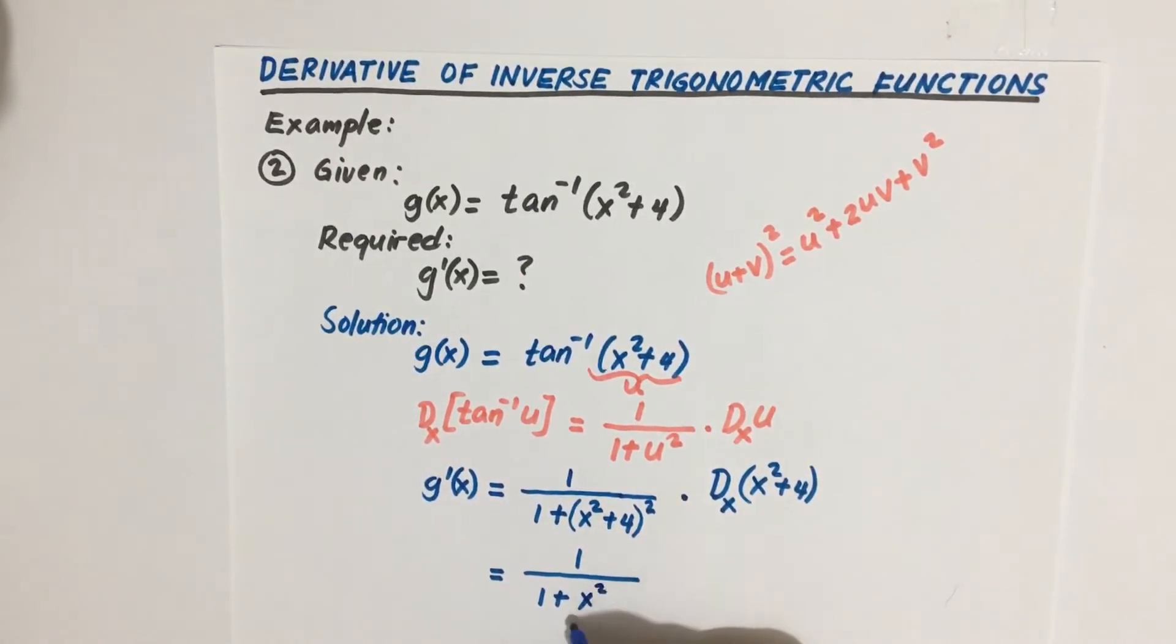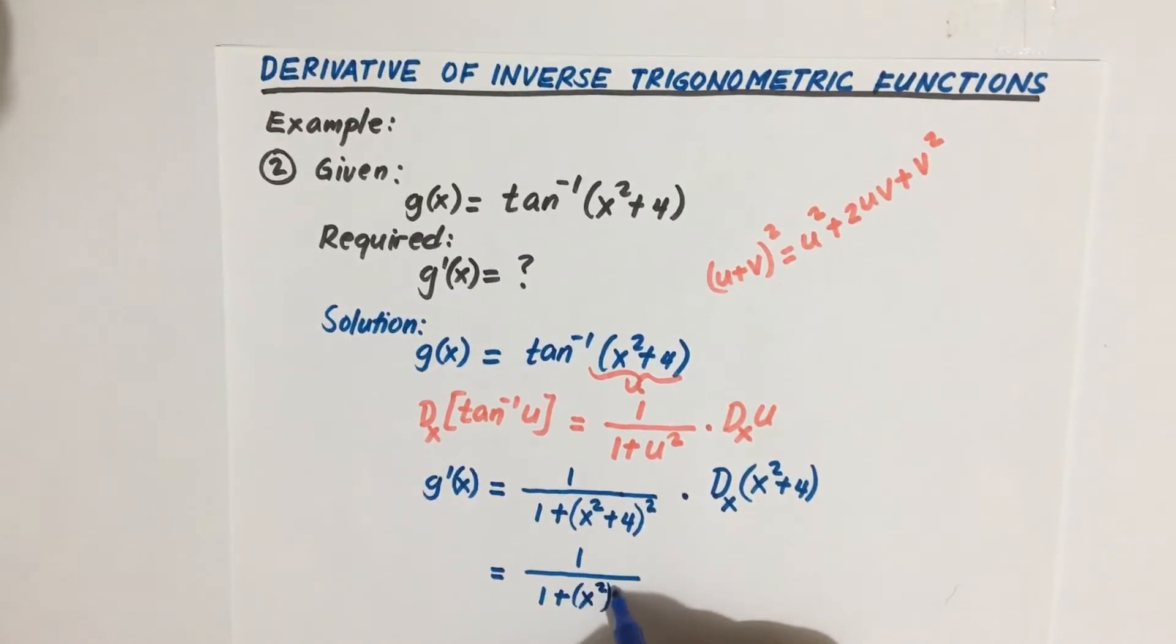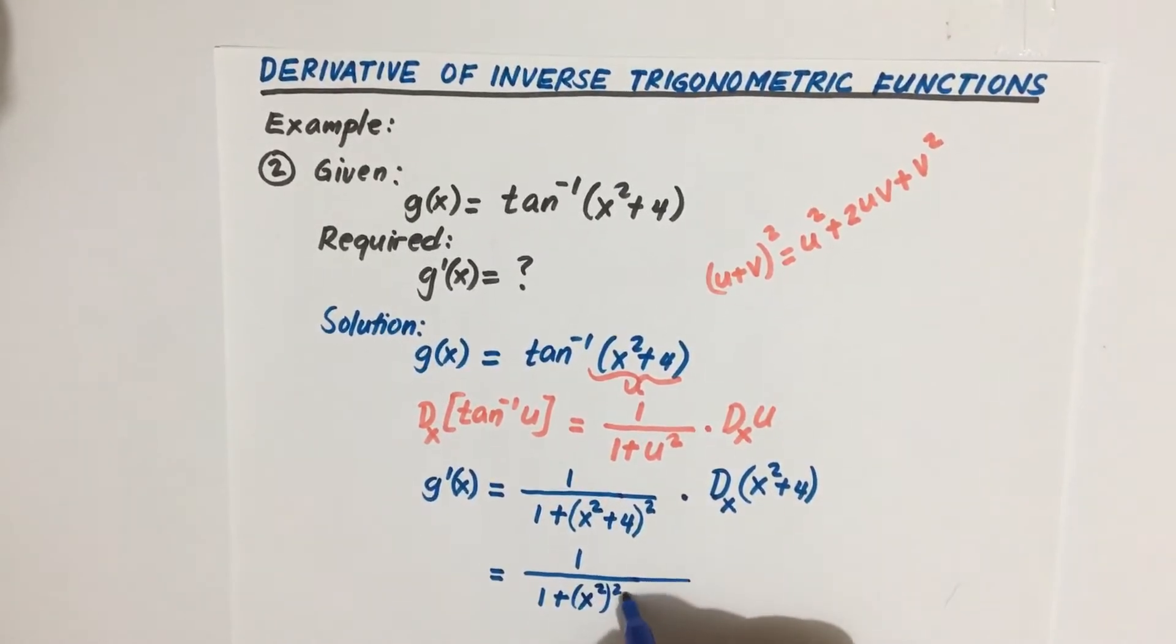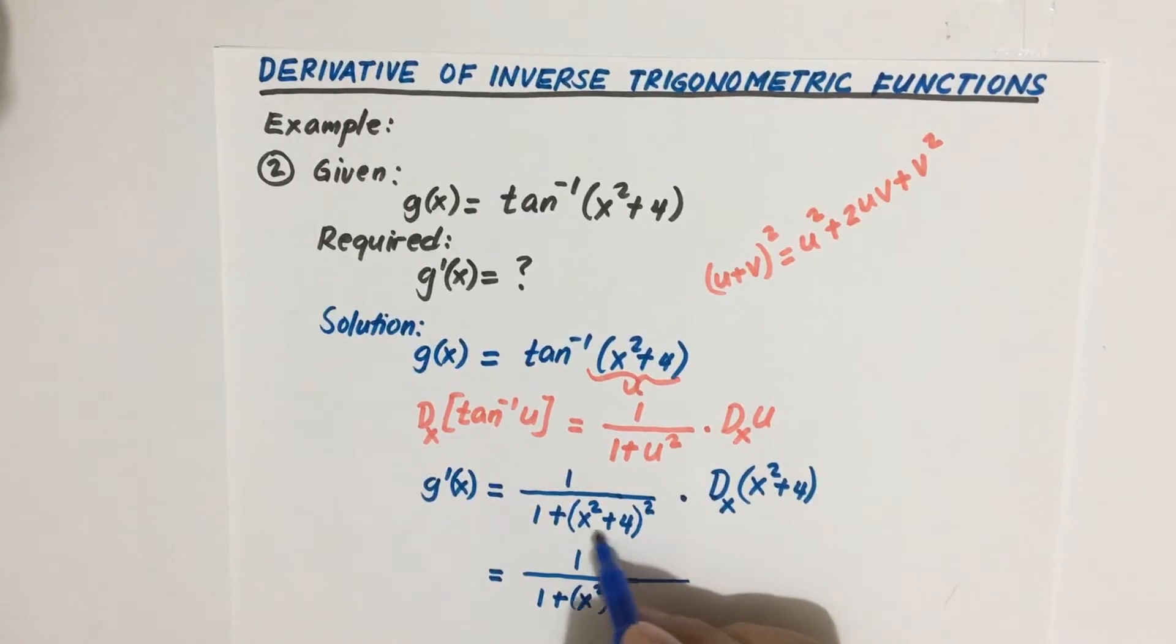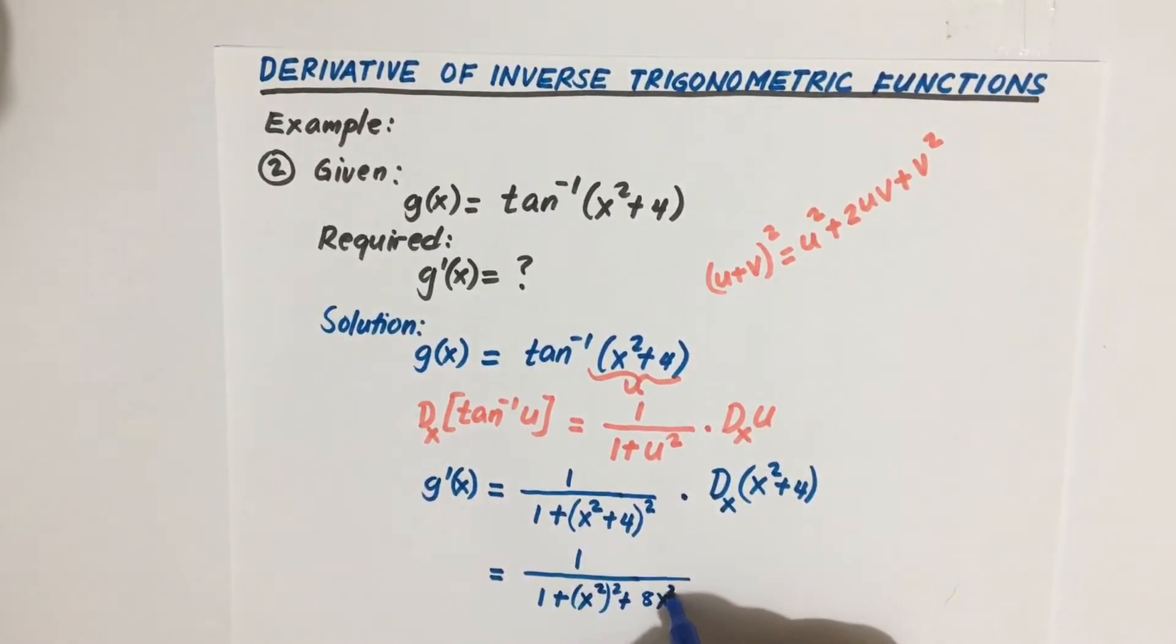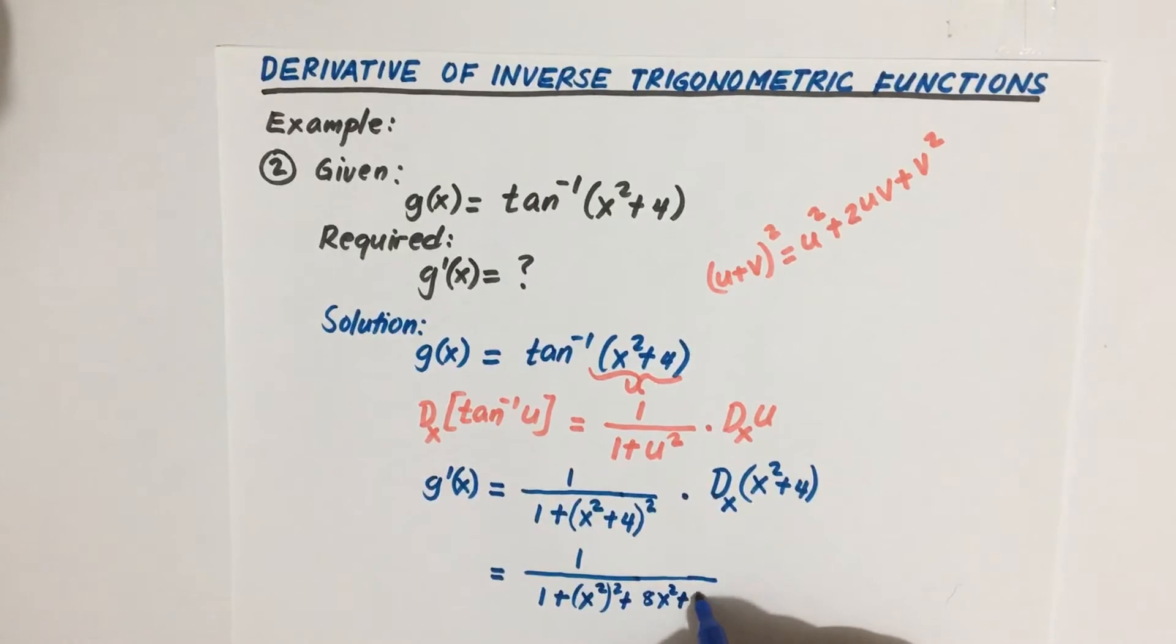Okay, or you can apply that formula. So we have x squared squared, plus twice the product, so 8x squared, then plus 16, then times derivative of this.